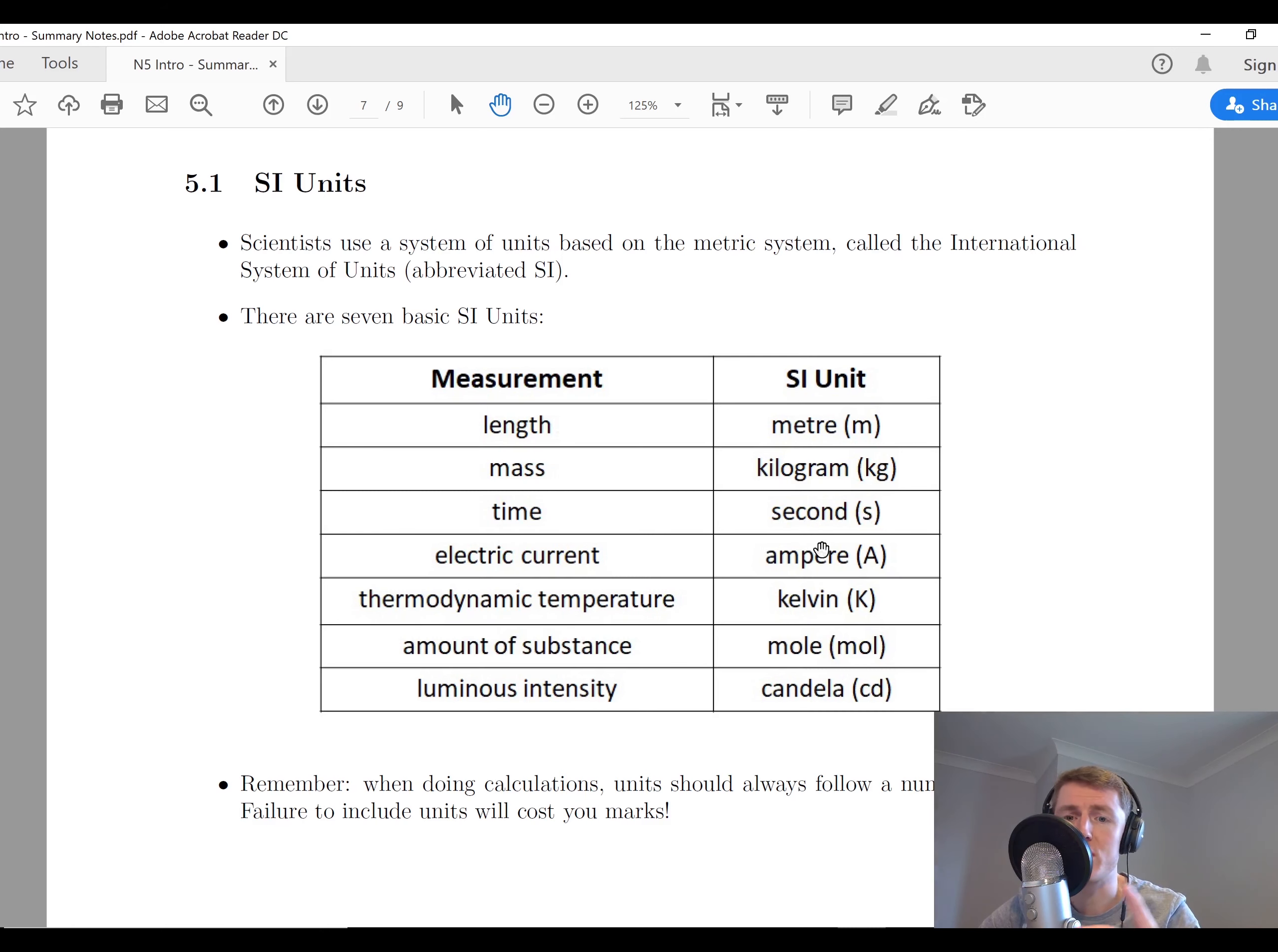Electric current is measured using the ampere or amps in A. Thermodynamic temperature in Kelvin, amount of substance is the mole, and luminous intensity is the candela.